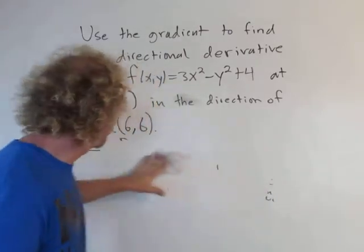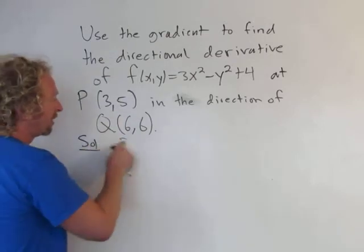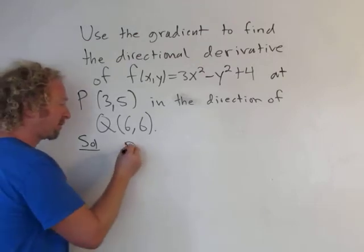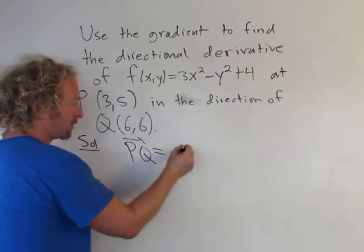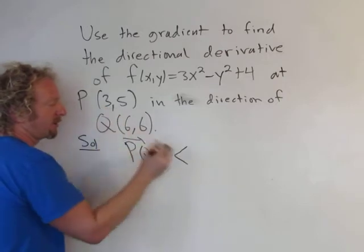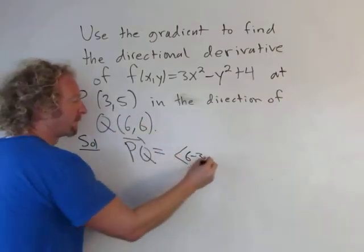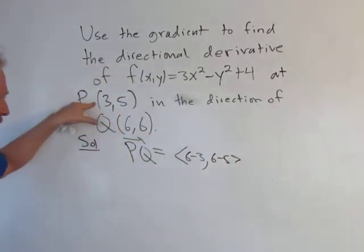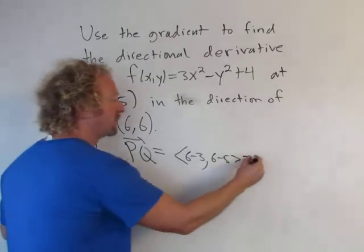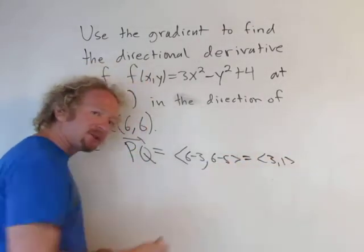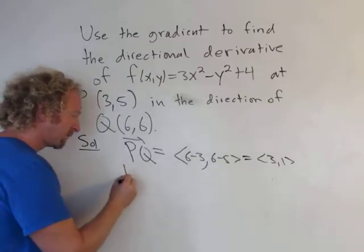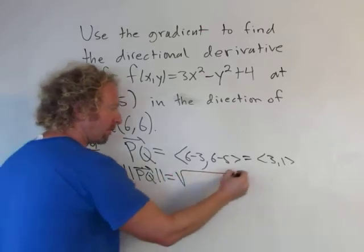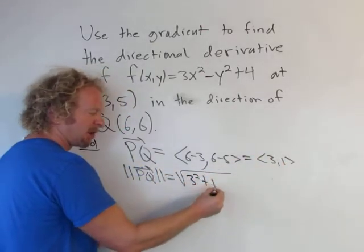Let's start by finding a unit vector. We have two points here, so we need to find a unit vector in the direction of those points — we have to create a vector. Looking at the vector PQ, we just subtract the components: 6 minus 3 and 6 minus 5. That gives us a vector connecting the two points, starting at P and going in the direction of Q. So this is (3, 1). Now we have to turn this into a unit vector.